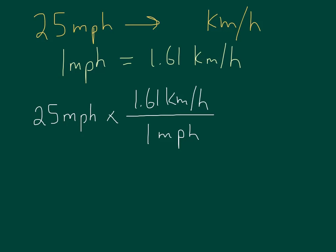Now, why have we done that? We know that one mile per hour is equal to 1.61 kilometers an hour, which means this ratio right here is really just the number one.